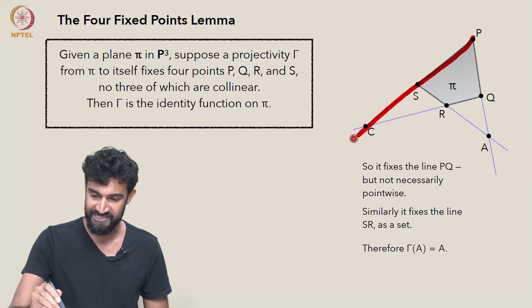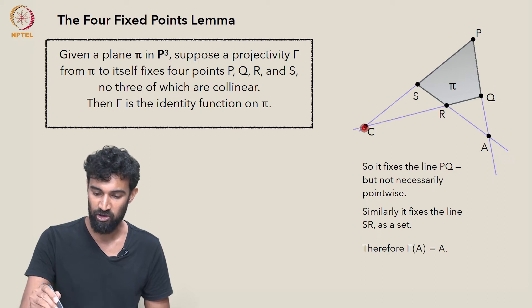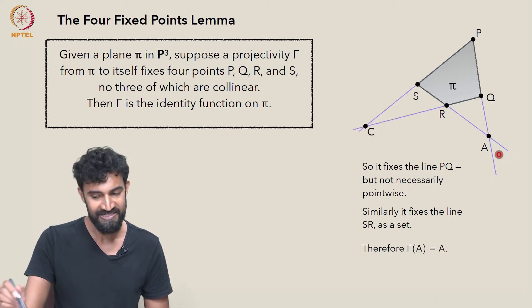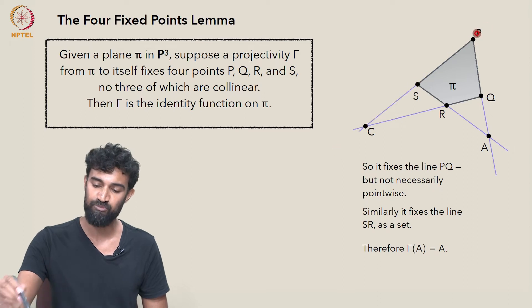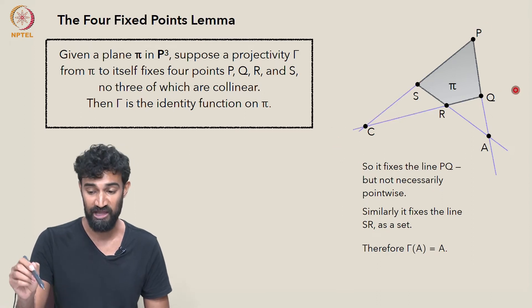Similarly, we can take this line and this line, call their intersection C, and by the exact same symmetric argument, γ is going to fix every point on this line and every point on this line point-wise.